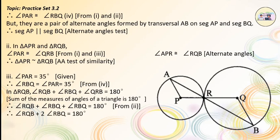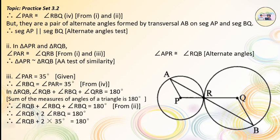Therefore, angle RQB + 2 × 35 degrees = 180 degrees. Therefore, angle RQB = 180 − 70 = 110 degrees.